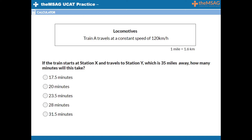First, let's deal with the pesky conversion. We can't have one value in miles and another value in kilometers per hour. We are given the conversion that one mile is equal to 1.6 kilometers. So let's multiply 35 miles by 1.6 to convert it into kilometers. 35 multiplied by 1.6 equals 56, so the distance the train will travel is 56 kilometers. This example demonstrates the complications that can be thrown into some speed, distance, time calculations.